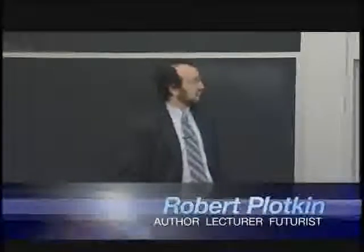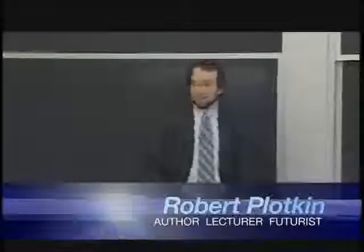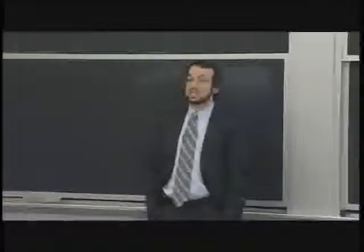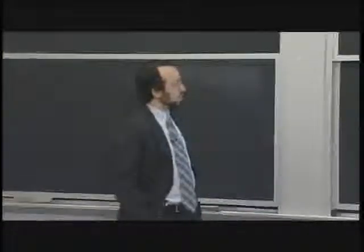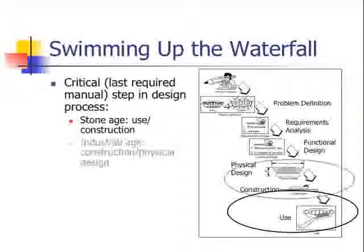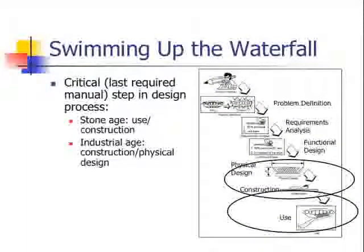But it's physical design and construction, and often those two might actually be merged together in one step — you might just build something without designing it ahead of time. Fast forward a bit to the industrial age, where we started to automate and systematize processes of physical design and construction.